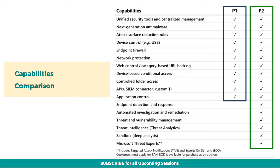Attack surface reduction capabilities, that harden devices, prevent zero-day attacks, and offer granular control over endpoint access and behaviors, is available in both plans. Device control removable storage protection, that prevents users, endpoints, or both from using unauthorized removable storage media, is available in both plans. Firewall capabilities on all endpoints is also available in both plans.